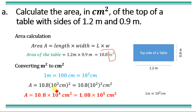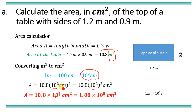Substituting the value of m as 10 power 2 cm, we have: area = 10.8 × (10² cm)². The square applies to the whole term 10 power 2 centimeter — this is 10 power 2 in scientific notation form, not simply 'square.' Taking the square of 10 power 2 gives 10 power 4. So area = 10.8 × 10⁴ cm². Moving the decimal point, we get 1.08 × 10⁵ cm², and this is the required answer.